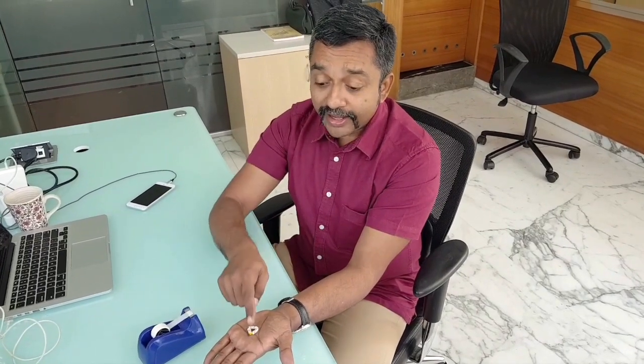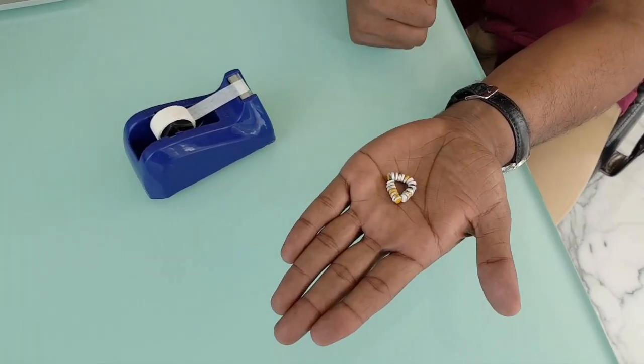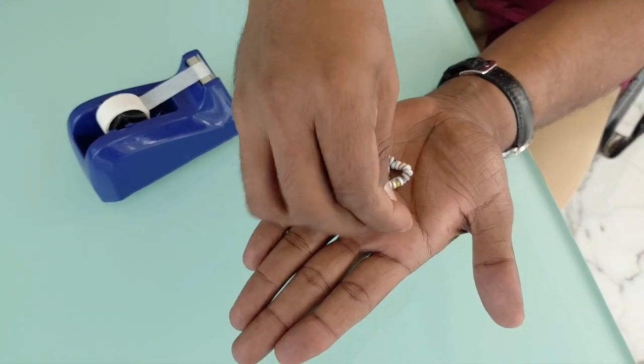We are going to show you what the magnets look like and I have got some here in my palm. Obviously they are all sticking together because they are magnets but you can see they are really small.